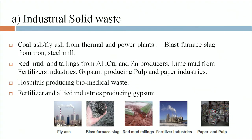Sources of industrial solid waste include coal ash or fly ash from thermal and power plants, blast furnace slag from iron and steel mills, red mud and tailings from aluminum, copper and zinc producers, lime mud from fertilizer industries, gypsum from pulp and paper industries, and hospitals producing biomedical waste.